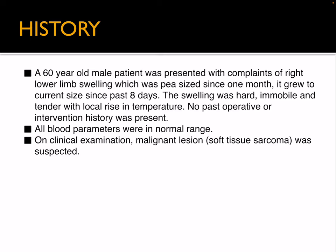A 60-year-old male patient presented with complaints of right lower limb swelling which was pea-sized since one month, and grew to a massive size in the past eight days. The swelling was hard, immobile and tender with local rising temperature. No past operative or intervention history was present. All blood parameters were in normal range. On clinical examination, a malignant lesion — that is, soft tissue sarcoma — was suspected.